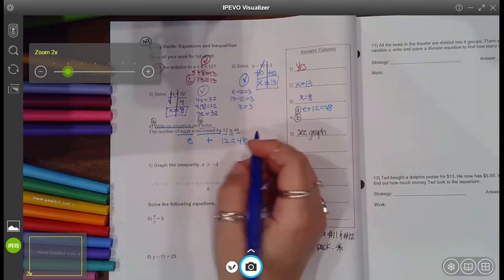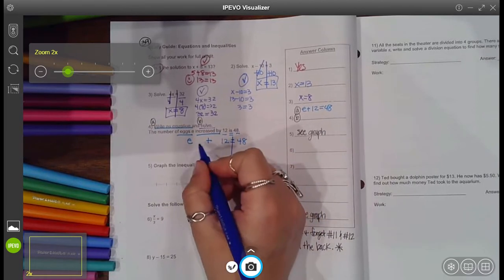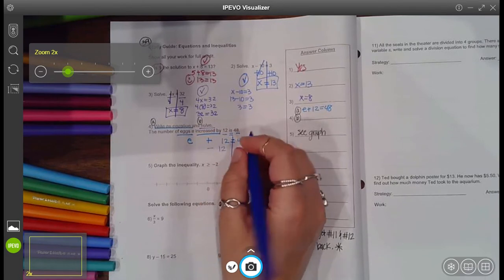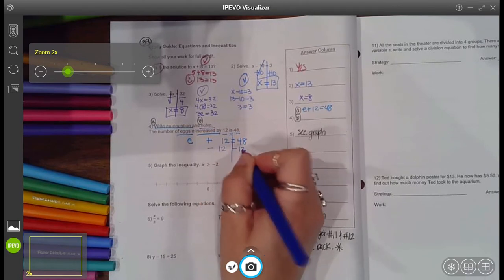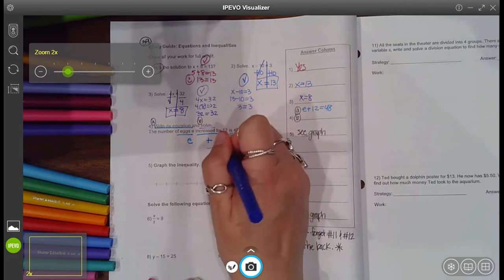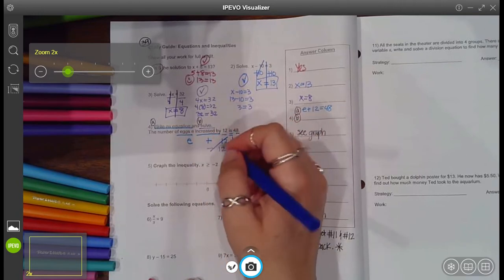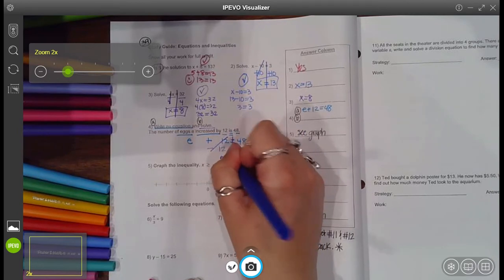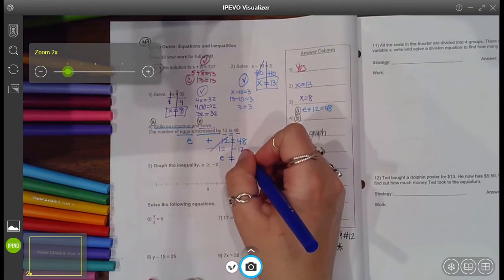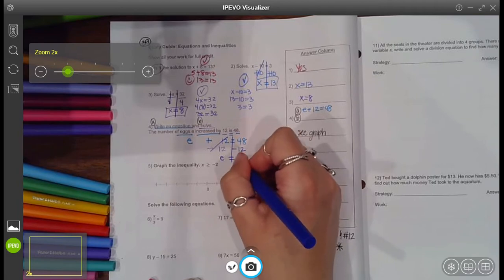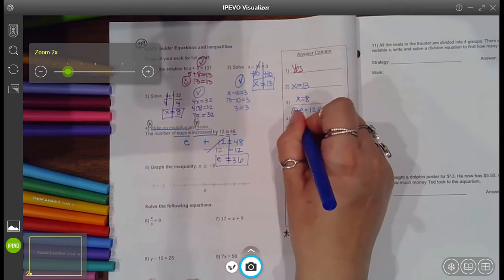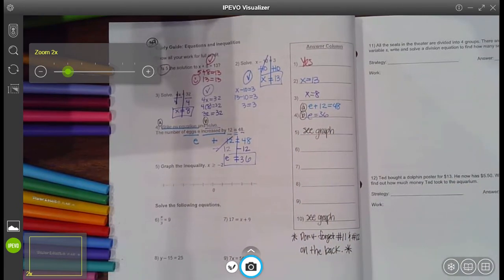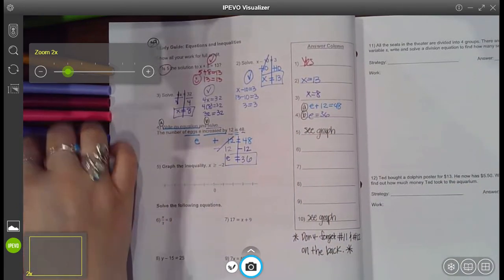So to solve it, I want to get my variable by itself. Well, the inverse of plus 12 is to subtract 12. Whatever you do to one side, do to the other. Well, 12 minus 12 cancels to zero because 12 minus 12 is zero. Now you have E plus zero or just E, bring down your equals and 48 minus 12. That's six. That's three. You get E equals 36 or just 36 for your answer.